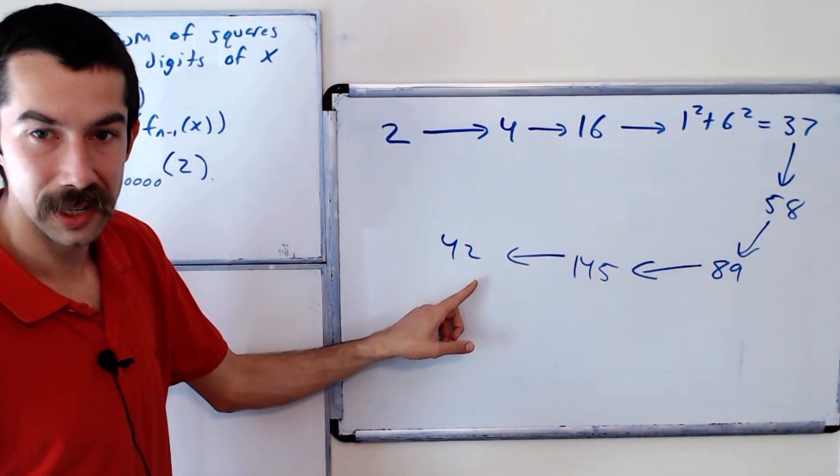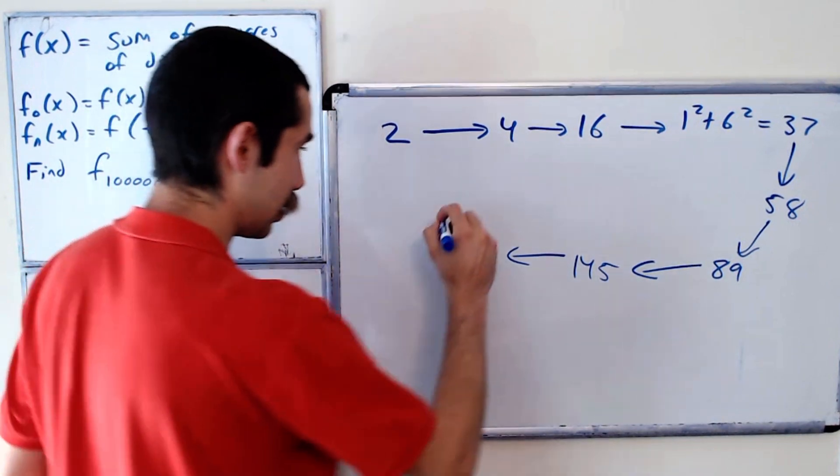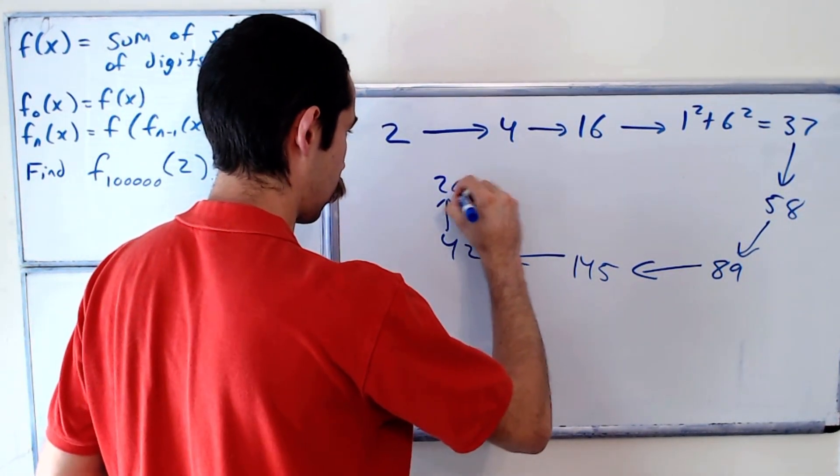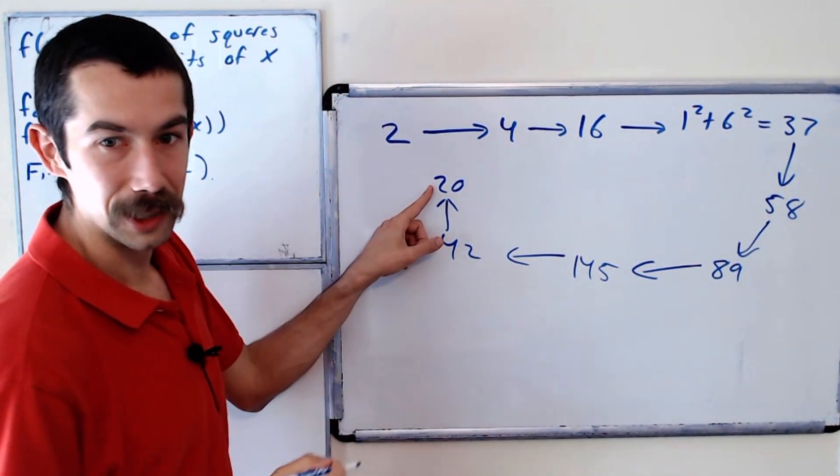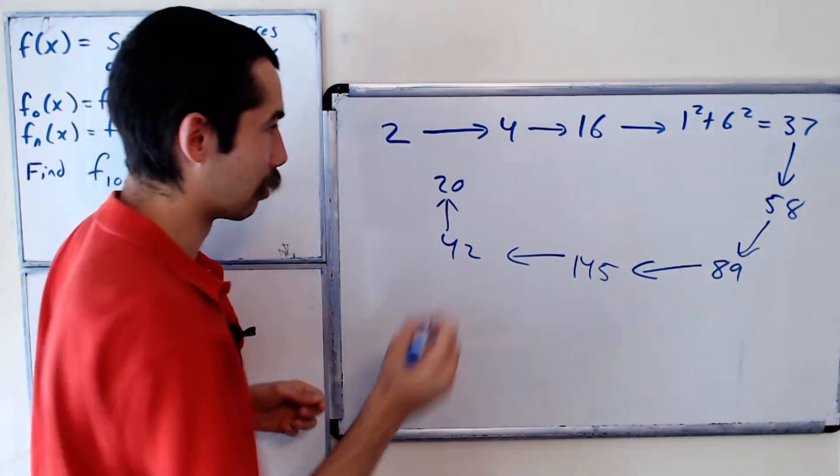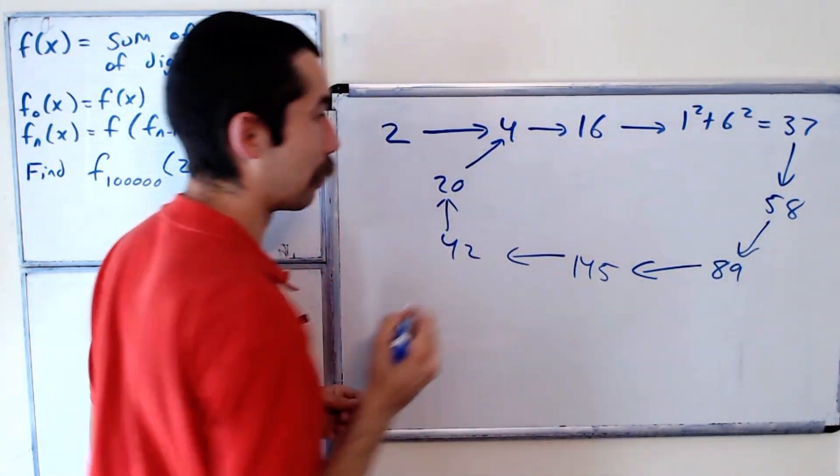16 plus 4 is 20, and then 2 squared is 4 plus 0 is 4. Okay, so we loop right back around.